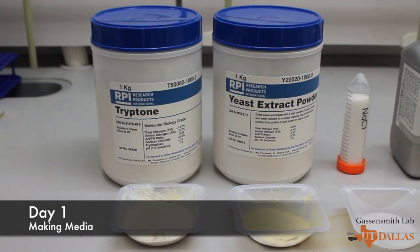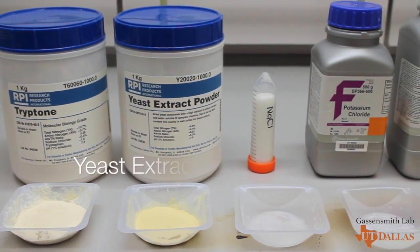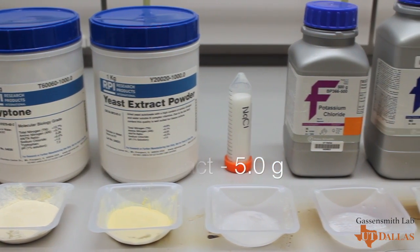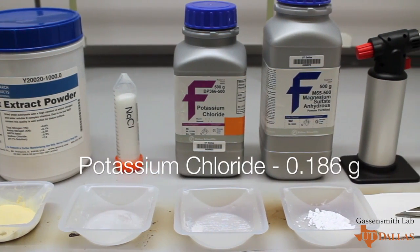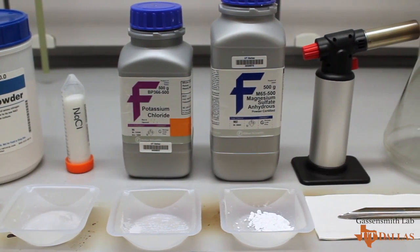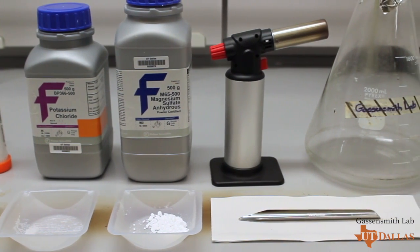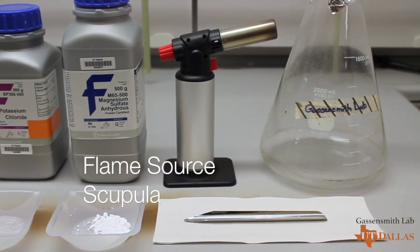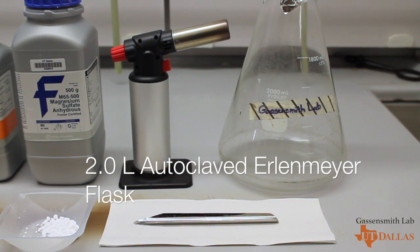To make one liter of media, you need 20 grams of tryptone, 5 grams of yeast extract, 0.584 grams of sodium chloride, 0.186 grams of potassium chloride, 2.469 grams of magnesium sulfate, a flame source to keep the area sterile, a scupula, and a two liter autoclave Erlenmeyer flask to ensure a dry and sterile container.